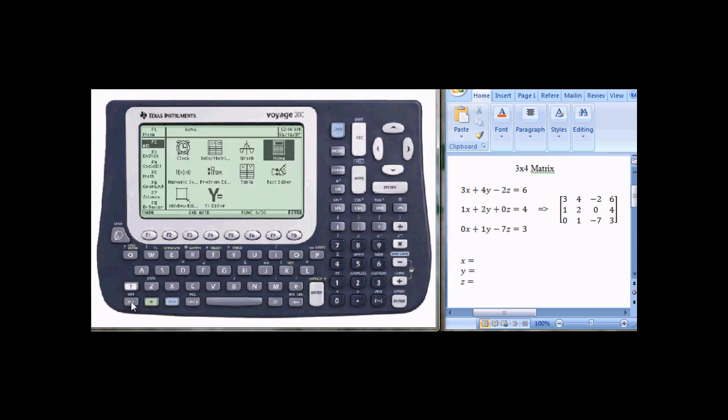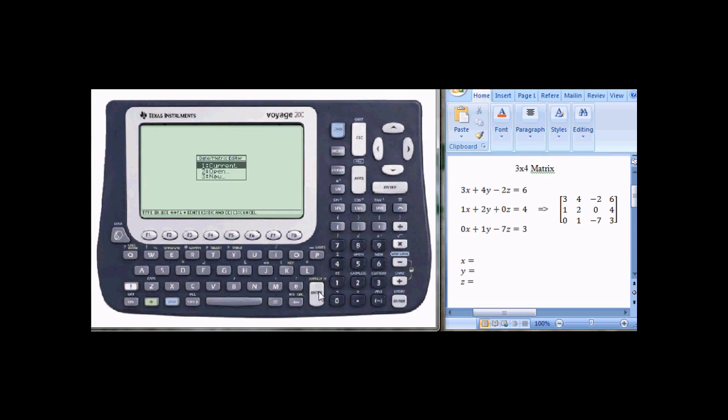First, turn your calculator on. You'll see an app screen. You'll want to scroll over to Data Matrix Editor and hit Enter. Scroll down to New, Enter.